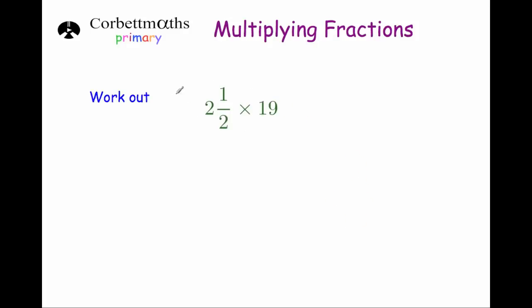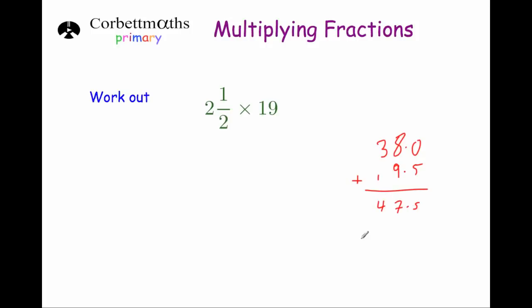Our last question is to work out 2 and a half times 19. Let's do 19 times 2 and then 19 times a half separately. 19 times 2 is 38. 19 times a half is the same as a half of 19, which is 9.5. Adding 38 and 9.5 together gives 47.5. So the answer is 47.5, or 47 and a half.